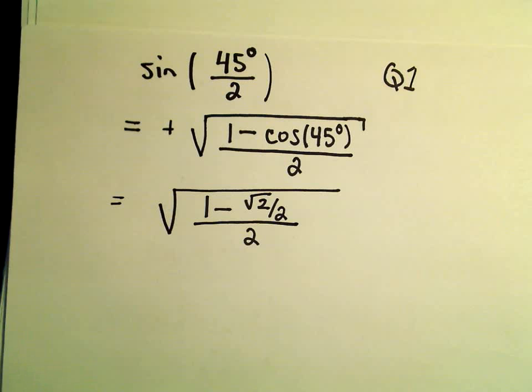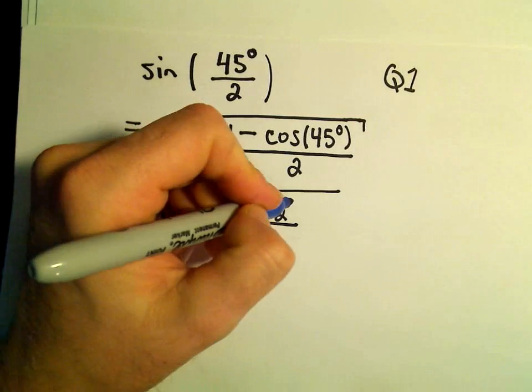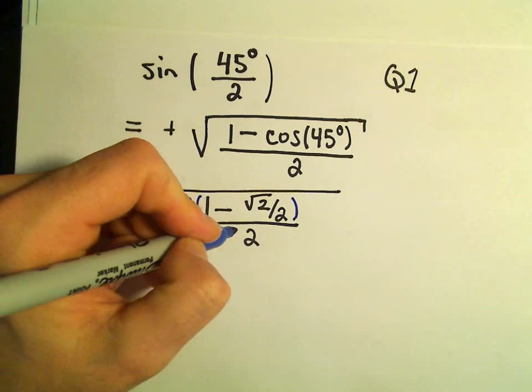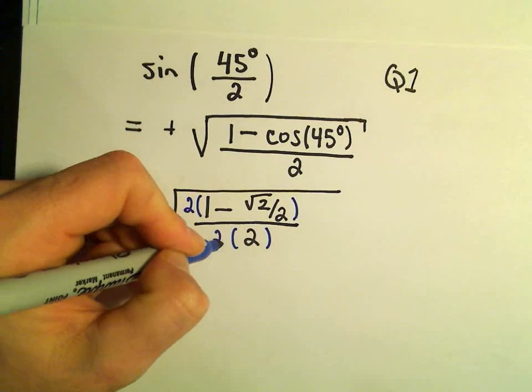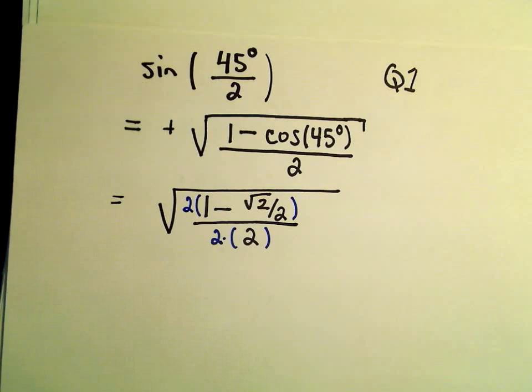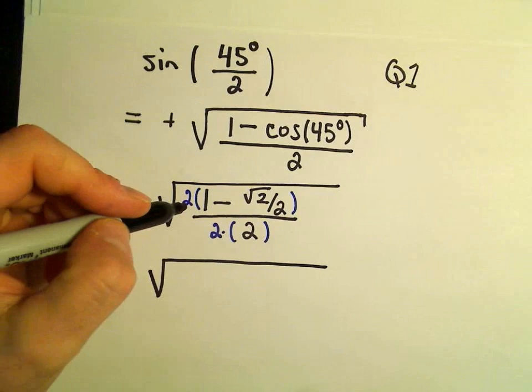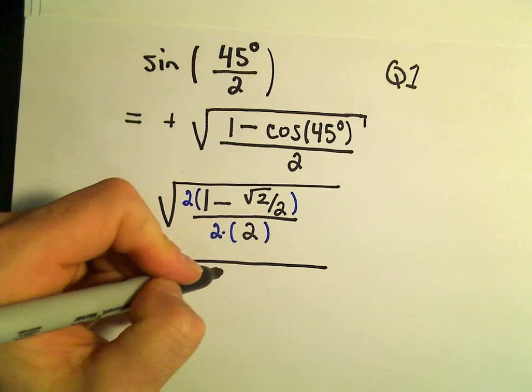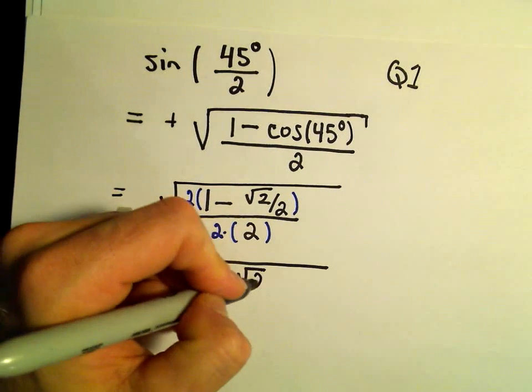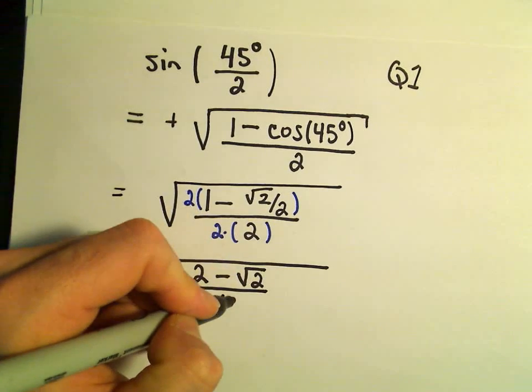And I think what I'm going to do just to get rid of the fractions, I'm going to multiply the top of my fraction by 2 and the bottom of my fraction also by 2. If we do that, we'll get 2 times 1, which is 2, minus the square root of 2, all over 4.